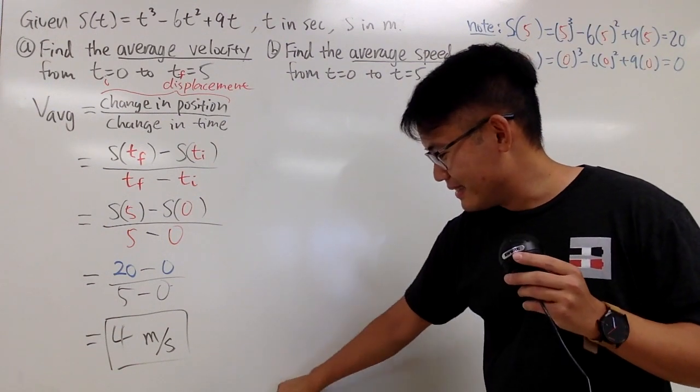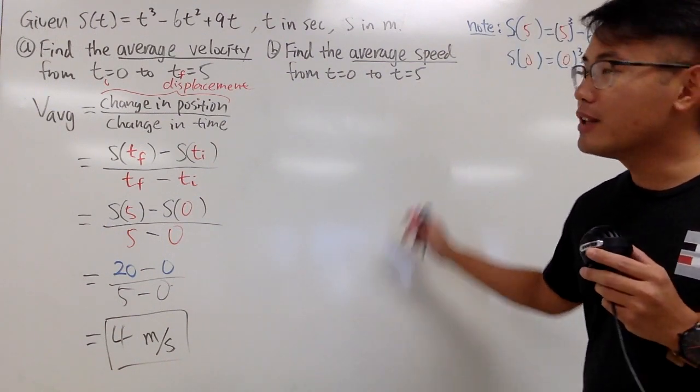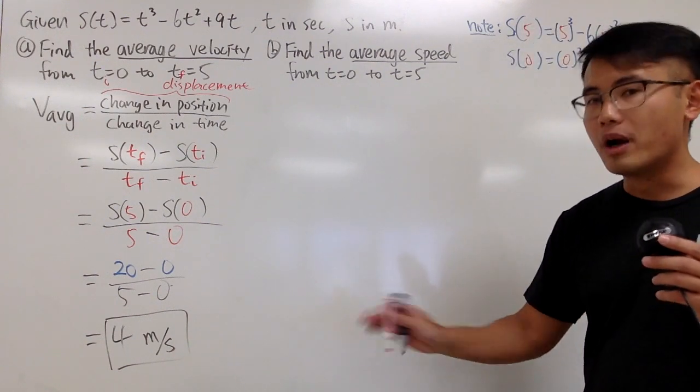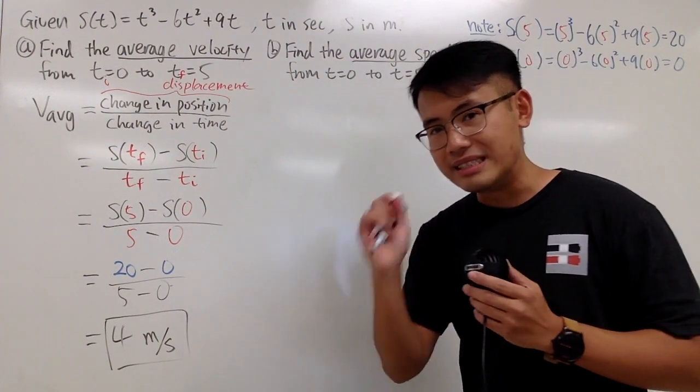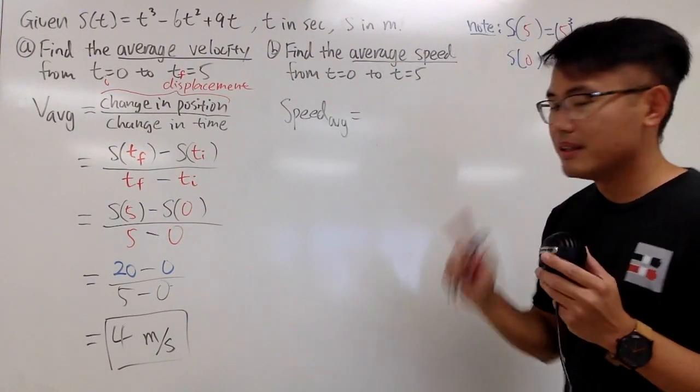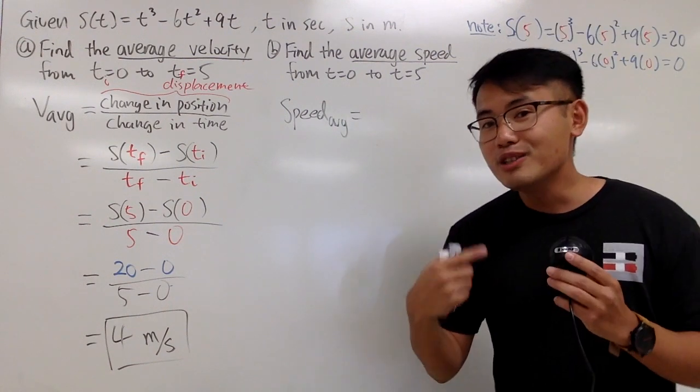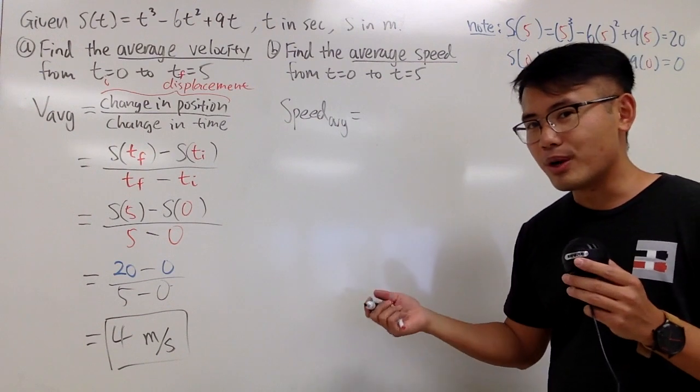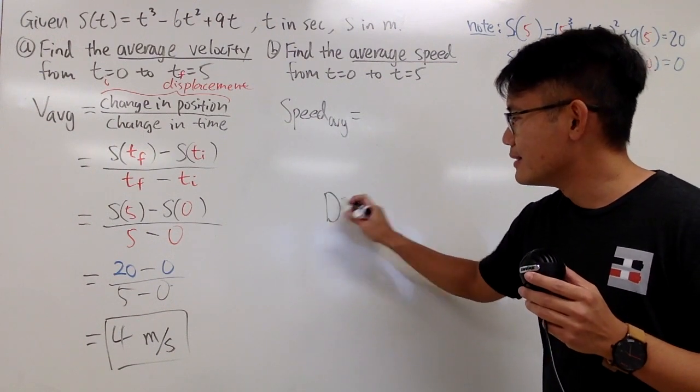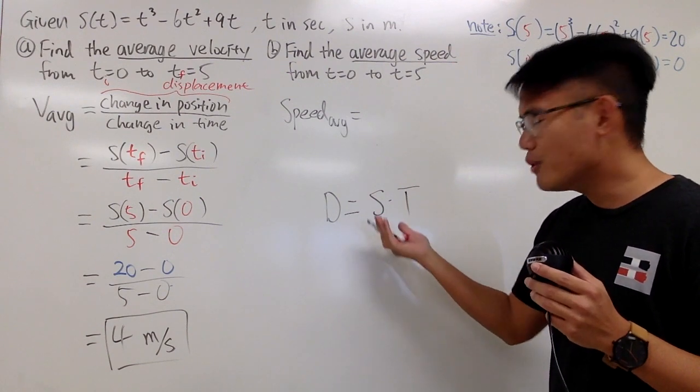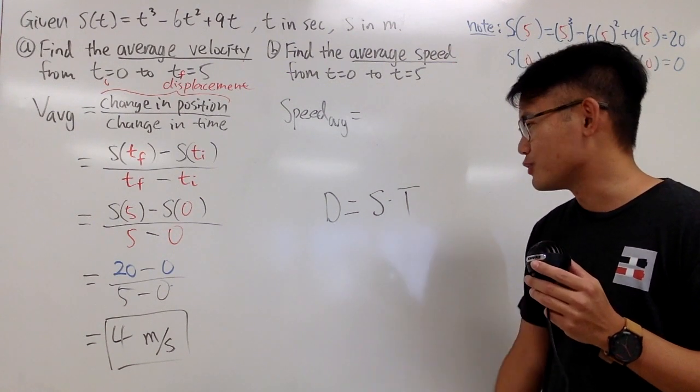It's weird, right? And once again, do not just take the absolute value of this and say the average speed is also 4. That's not the case. That only works if you have instantaneous speed.